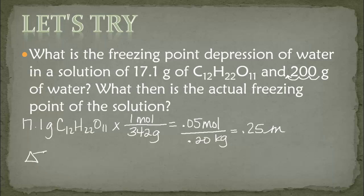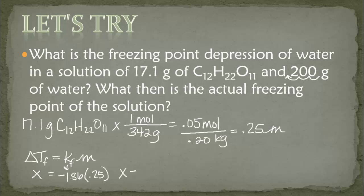Now we plug into the equation. Delta Tf equals KF times M. KF for water is negative 1.86, and we multiply by the molality of 0.25. So delta Tf equals negative 0.465 Celsius degrees. The negative just means that we have lowered the value — the freezing point depression is negative 0.465 Celsius degrees.